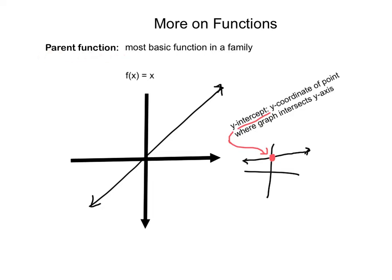So a parent function is the most basic function in a family. A family is defined as a group with shared characteristics. So I'll just use an example. This is a linear function right here. Let's say we wanted another one that's similar. It would be like this or like this. These are all within the same family.